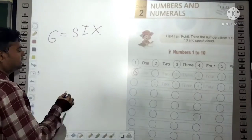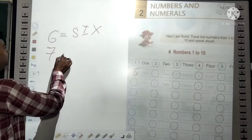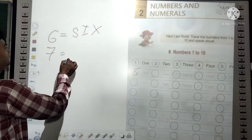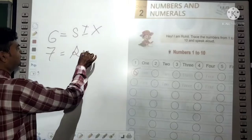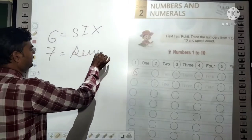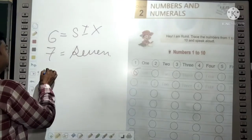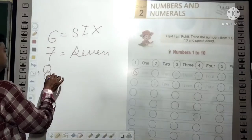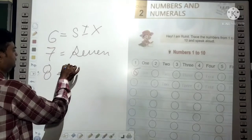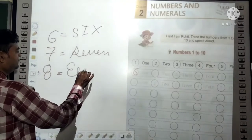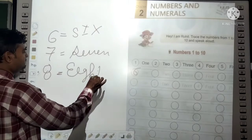In the same way, you will write 7. The spelling of 7 is S-E-V-E-N. And the spelling of 8 is E-I-G-H-T.